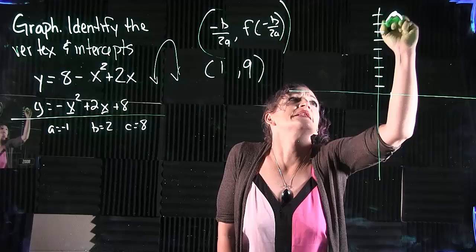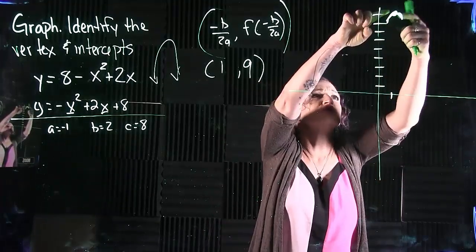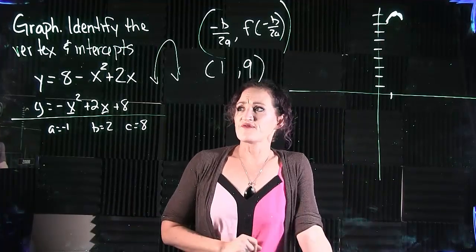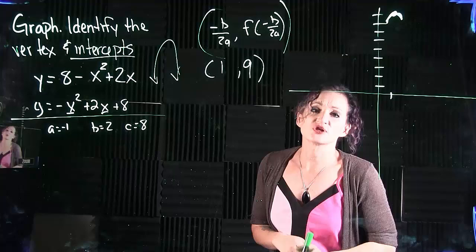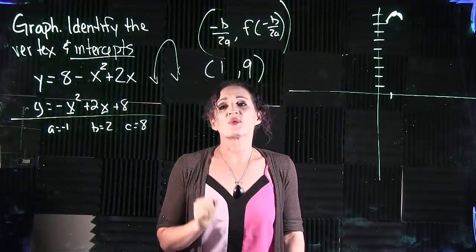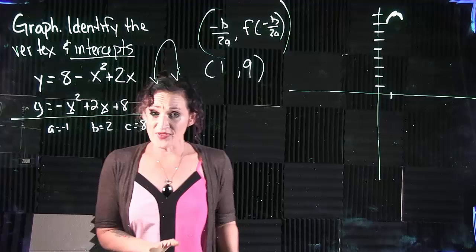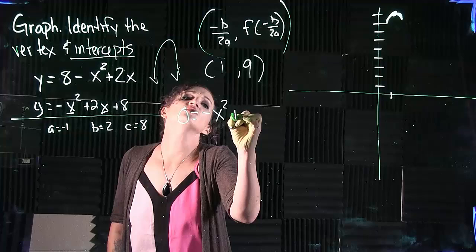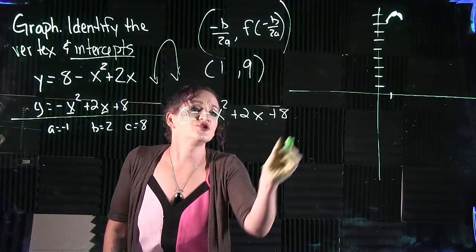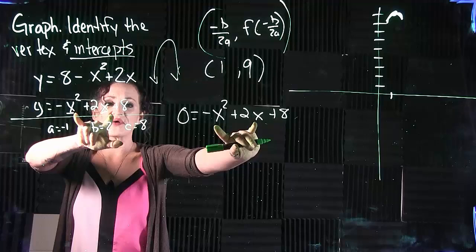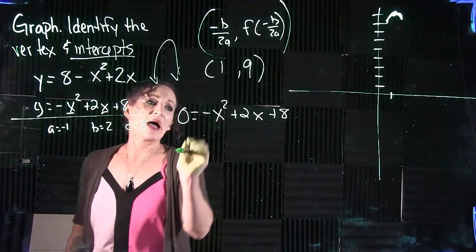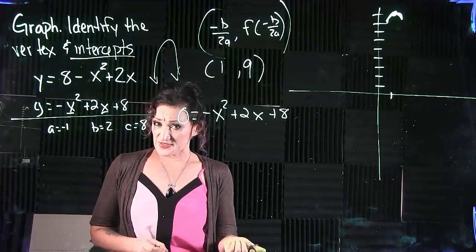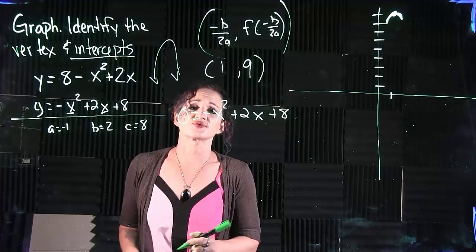So we do know our vertex is 1, 9. We do know that this is a negative quadratic, so we know it should be going downwards from that point. The other thing that we need to find for this example are the intercepts, which means we want to find the x-intercepts and the y-intercepts. Now in order to find the x-intercepts for any function, you want to set the equation equal to zero and you want to solve. So I'm going to take this variation of our equation, I'm going to set it equal to zero so we can solve this thing. Now the first thing I want to do, I want to see if this factors. I'm going to try and solve it that way, solve by factoring.